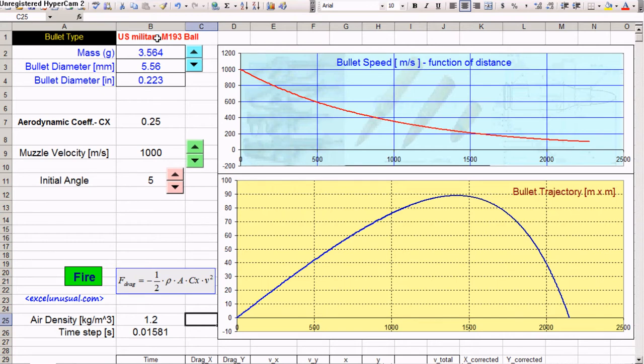Here we can change the input parameters, the bullet type. There are eight preset different types of military and civilian competition bullets. If you click on this button you can select from them, but you can also type manually whatever value you want. These are eight standard bullets.